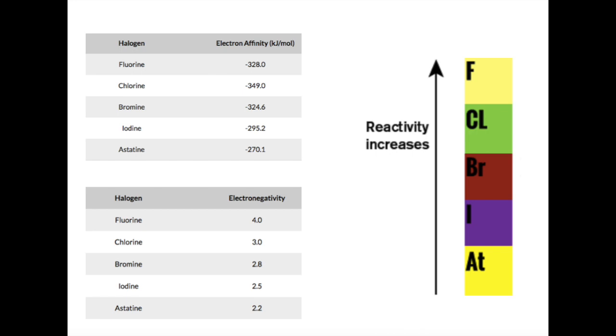Reactivity of elements is a periodic trend where it decreases as it goes down the group. This is clearly shown in the large image on the right. This trend arises because of the atomic radius increasing in size, with an increase of electronic energy levels.